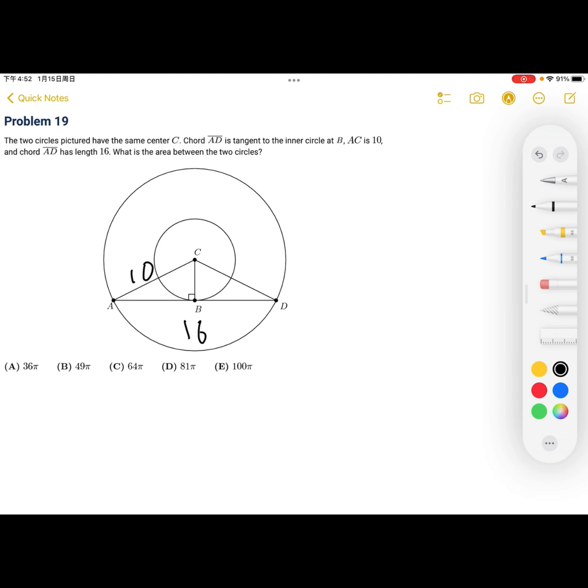So, if this entire length is equal to 16, that means AB and BD are equal to 8. And now, all we have to do is to solve for the height of the triangle. So, using the Pythagorean theorem, we get that 100 is equal to 64 plus B squared. So, B is equal to 6.